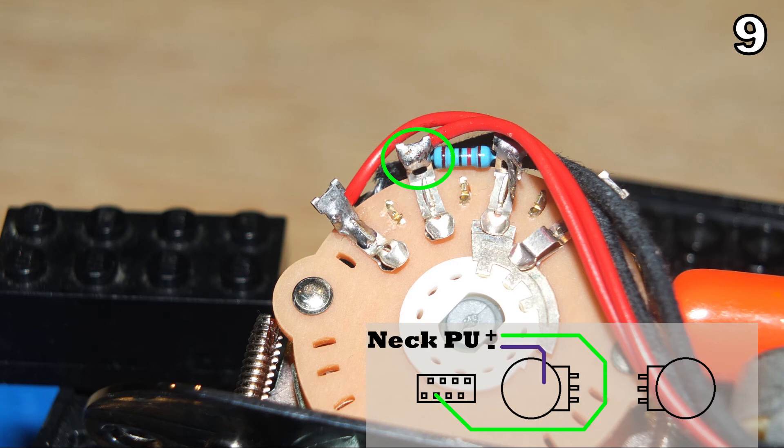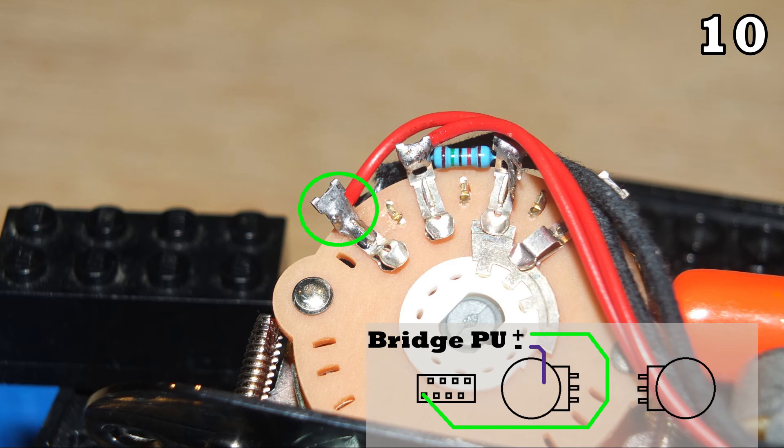This already brings us to step number ten, which is the bridge pickup. Its plus goes to the far left pin of the bottom row of the three-way switch. It should be the only unsoldered pin of the bottom row. Again any minus ground or shielding goes to a housing of any pot you like. Again in my case it was the volume pot.